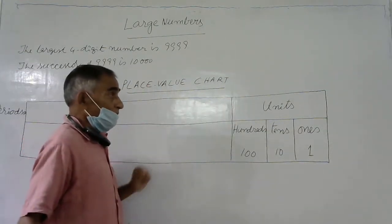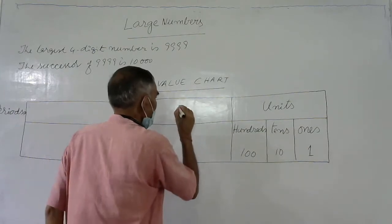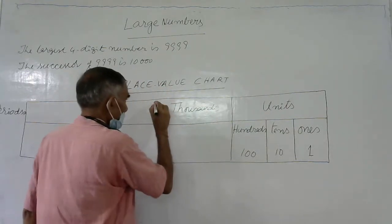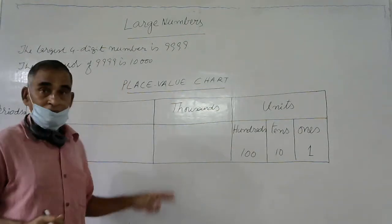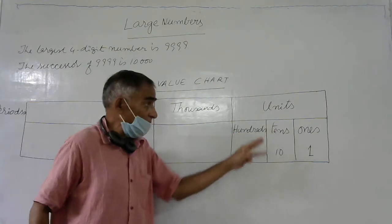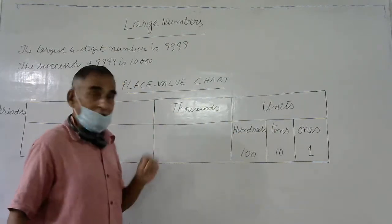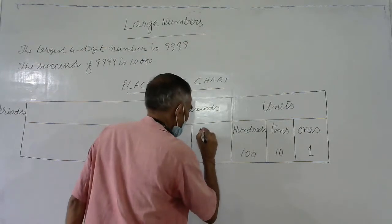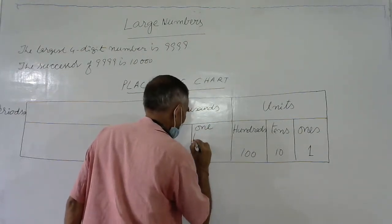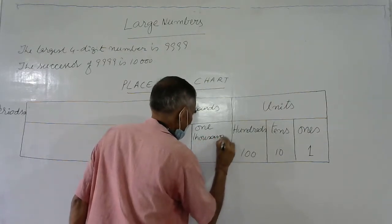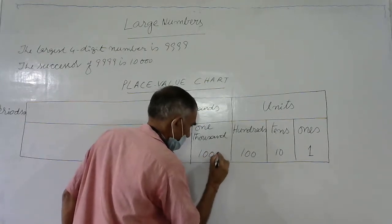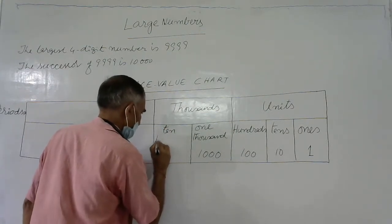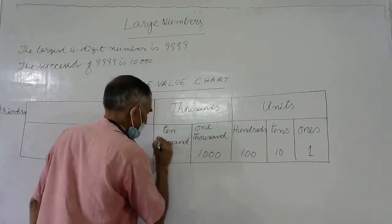The next period after units is the thousands period. The thousands period is divided into two places, not three. The first place is one thousand, and the next is ten thousand. So the thousands period contains the one-thousands place and the ten-thousands place.